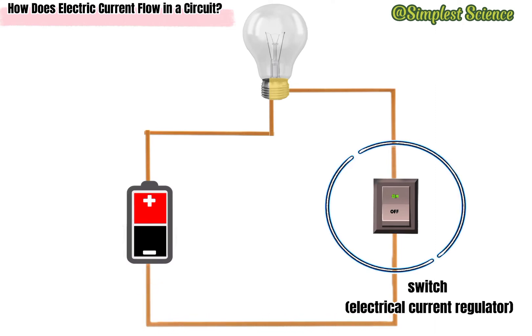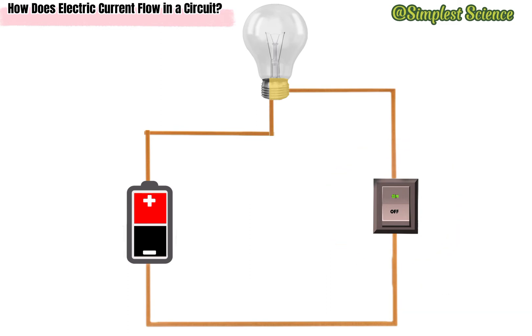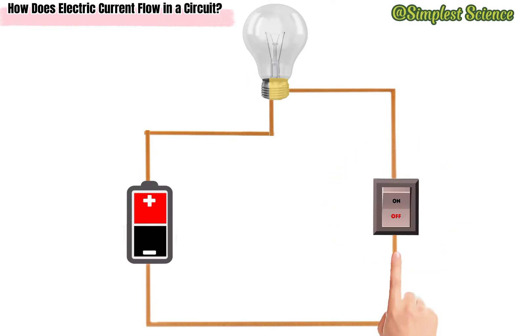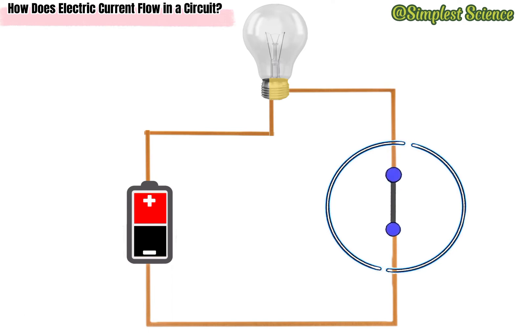The switch serves the purpose of regulating the flow of electrical current within a circuit. It works in an on and off mechanism — by turning the switch off it creates an open circuit, emphasizing a break in the circuit, and by turning the switch on it creates a closed circuit, emphasizing a complete circuit.